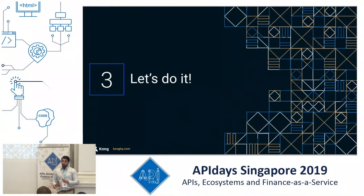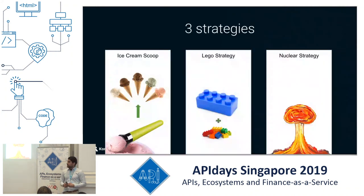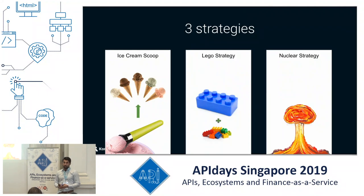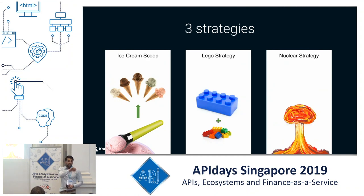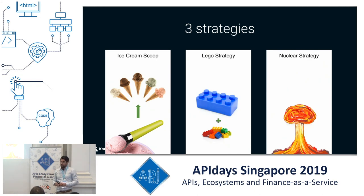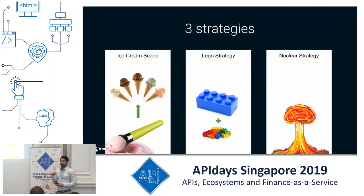If we do find out that we need to blow up the monolith and scale our systems, then we can approach the transition. There are three different strategies we can adopt. One of them I call the ice cream scoop strategy — imagine having a large box of ice cream and scooping out individual components, individual services, that can now be deployed, built, and scaled separately. Then there is what I call the Lego strategy — we have this huge piece of Lego which is our monolith, maybe too complicated to transition, so we build new services and products around the legacy monolith while greenfield development is built in a decoupled way.